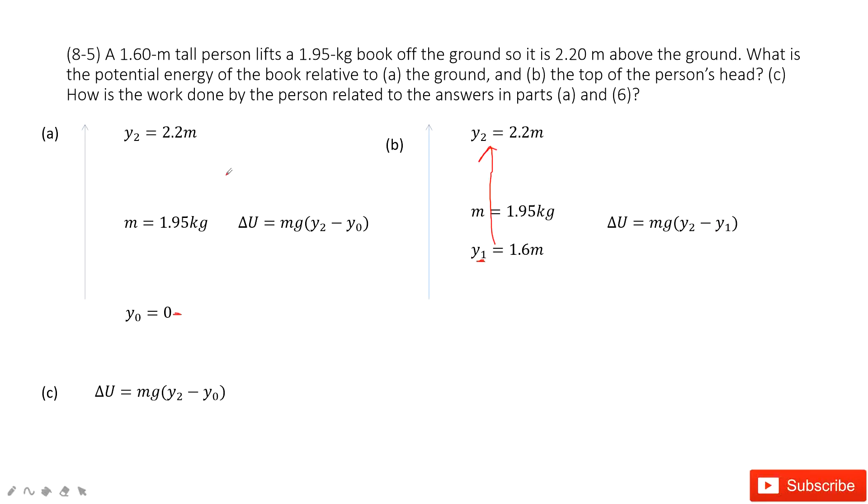The third one asks you how much work is done by the person, relative to the answers in part A and part B. The work done by the person is equal to the change in potential energy.